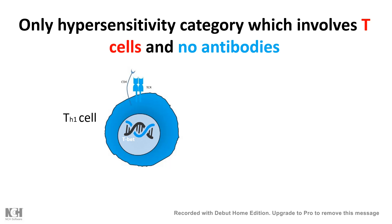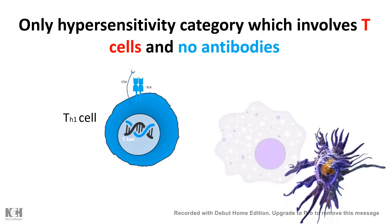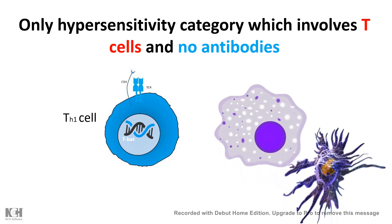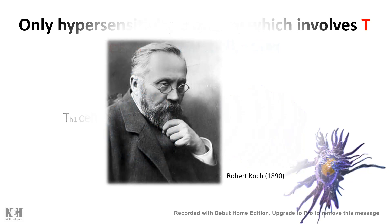Apart from Th1 cells, macrophages and dendritic cells are also involved in this hypersensitivity reaction. We will take two examples to understand the science and mechanism behind the Type 4 hypersensitivity response.